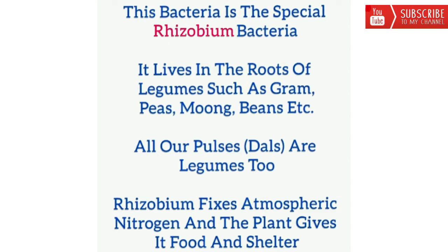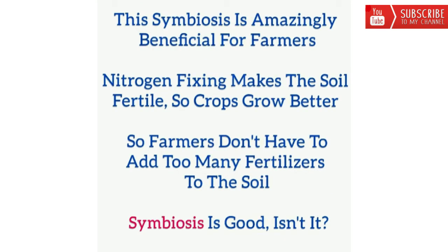This bacteria is the special rhizobium bacteria. It lives in the roots of legumes such as gram, peas, moong, beans, etc. All our pulses and dals are legumes too. Rhizobium fixes atmospheric nitrogen and the plant gives it food and shelter. This symbiosis is amazingly beneficial for farmers. Nitrogen fixing makes the soil fertile so crops grow better, and farmers don't have to add too many fertilizers to the soil.